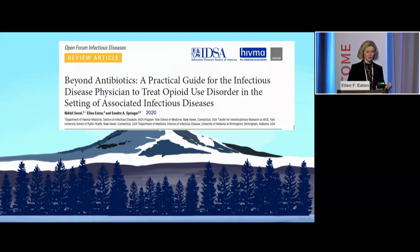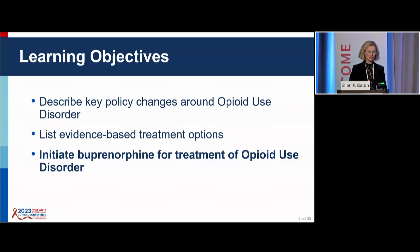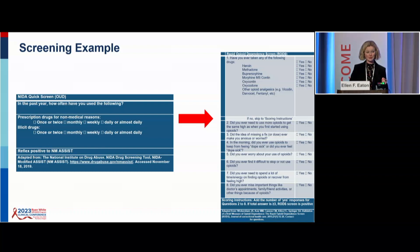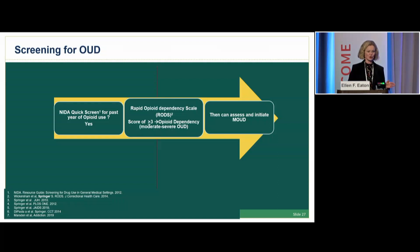For those thinking about prescribing buprenorphine, there's a step-by-step guide for the ID clinician who is not addiction medicine trained — I highly recommend it. Hopefully, most of you are screening for substance use in your clinics. If not, there are several validated tools. The NIDA quick screen is a two-item questionnaire. If patients are negative for prescription drug use for non-medical reasons or illicit drugs, you're done. If they report yes, you get more granular questions. If they were positive, the RODS tool can walk you through additional questions: what type of opioids, are you injecting them, how are you taking them? Then you can assess and initiate medications for opioid use disorder as part of your routine practice.